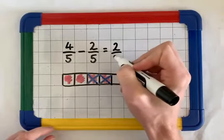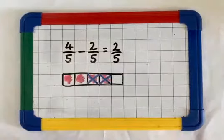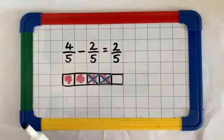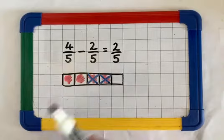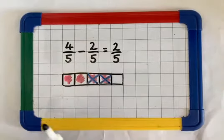So my answer is 2 fifths. And just like with adding fractions with the same denominator, our denominator doesn't change. It's just our numerator.